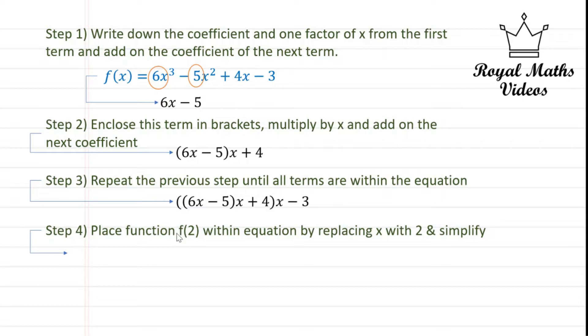Step 4 would be to place the function f(2) within the equation by replacing x with 2 and then simplify. So f(2) is equal to (6 × 2 - 5) × 2 + 4, and this is all done first. Then we multiply by 2 again and then minus 3, following the BIDMAS rule, which is brackets, indices, division, multiplication, addition, subtraction.